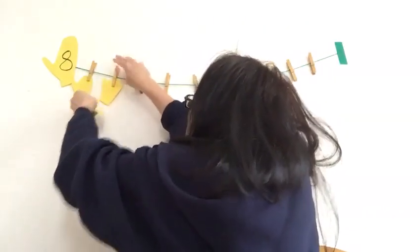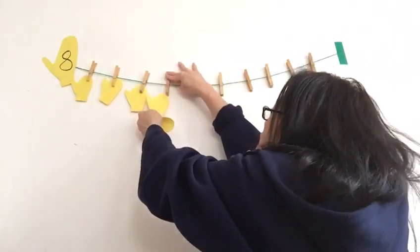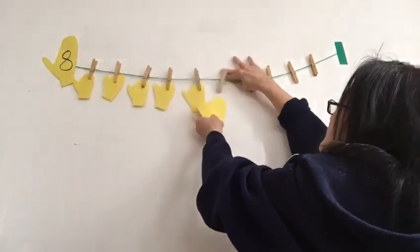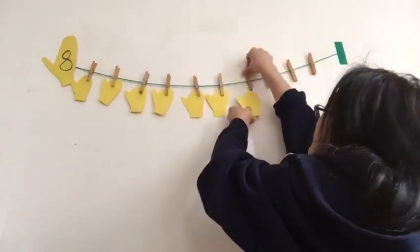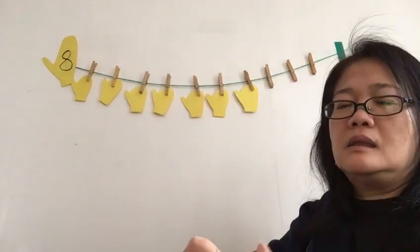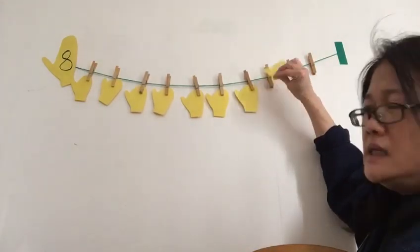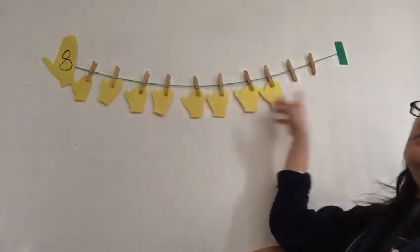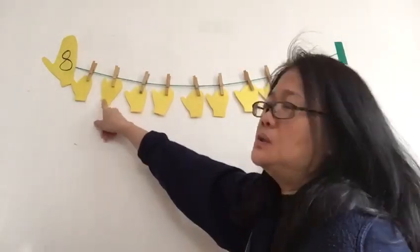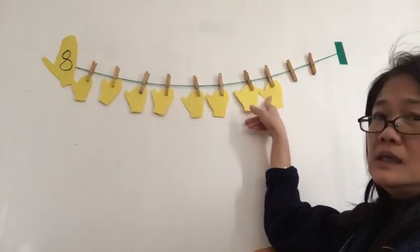Two, three, four, five, six, seven, eight! Let's count — what number is this? Eight. So I have to hang eight mittens: one, two, three, four, five, six, seven, eight. Eight!